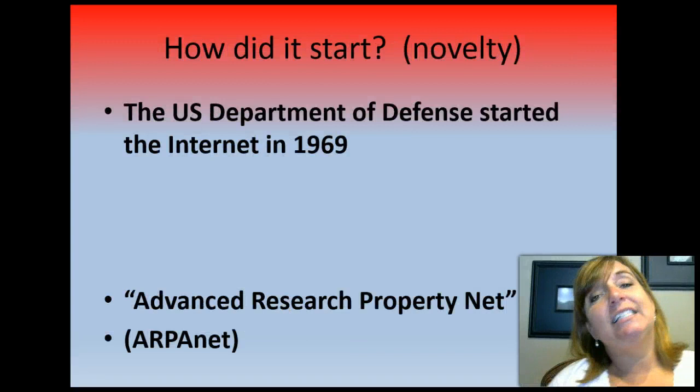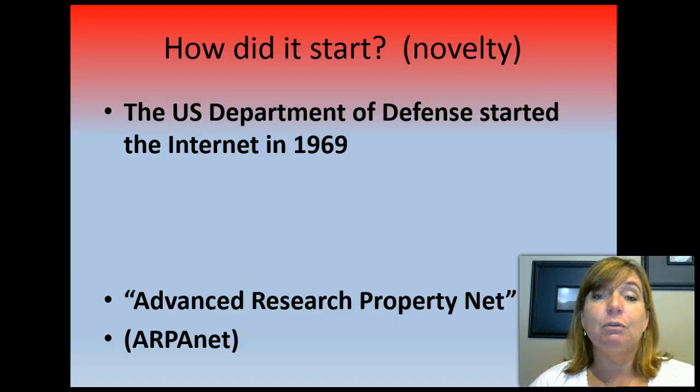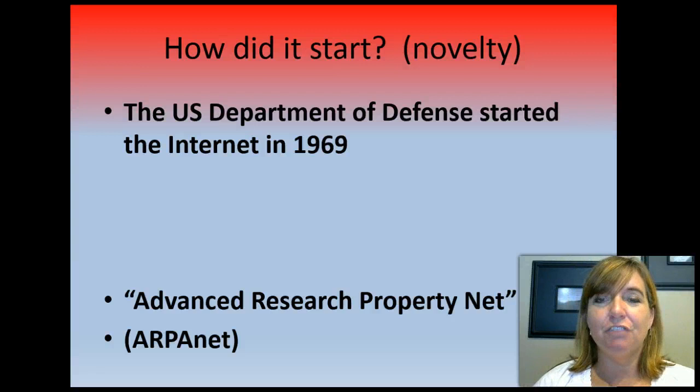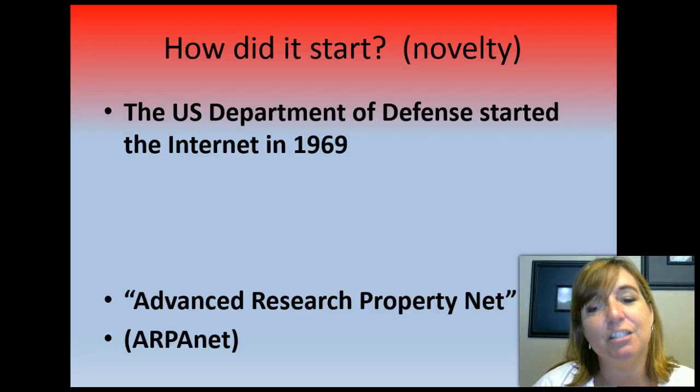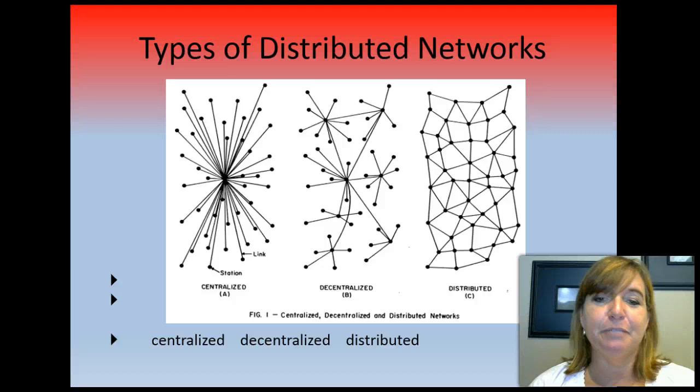How did it start? When was it in the novelty stage? Like all good technology, it started with the Defense Department in 1969. Remember, we were in the middle of the Cold War worried about getting attacked by the Soviets. The military wanted to figure out a way that computers could talk to each other in the event of a nuclear attack. So they developed something called the Advanced Research Projects Network — ARPANET — which actually turned into the first network system.